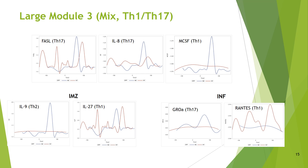The third module is also a mix of the three phenotypes, but in a different manner. There is a core of three analytes present in both processes, with preponderance of the T-helper 17 phenotype. However, two other analytes combine to this core during immunization, and this pair is different from the pair of analytes that join during infection. During immunization, there is a combination of the T-helper 1 and T-helper 2 response, while during infection, there is a combination of T-helper 1 and T-helper 17 response.